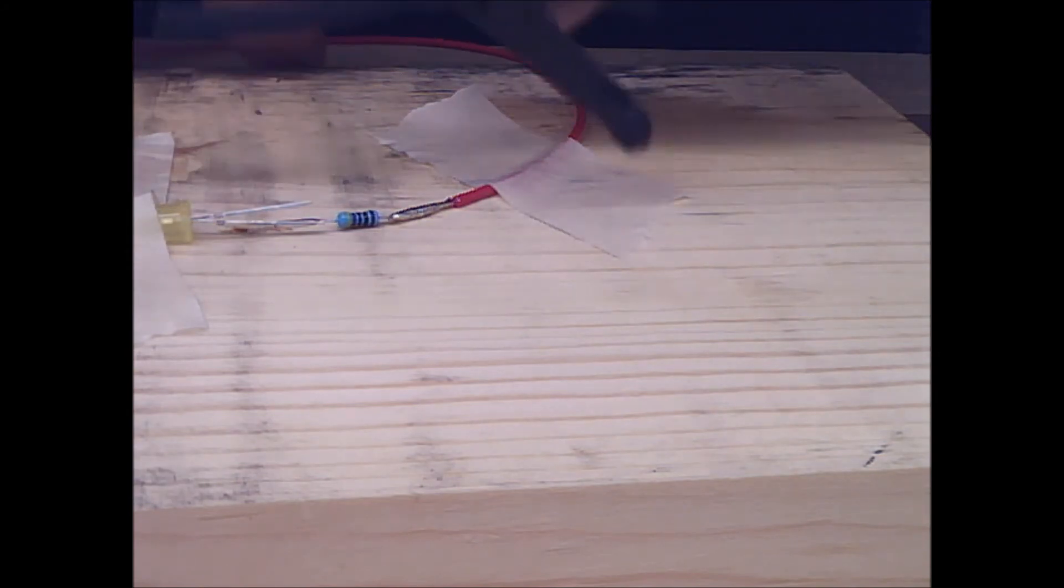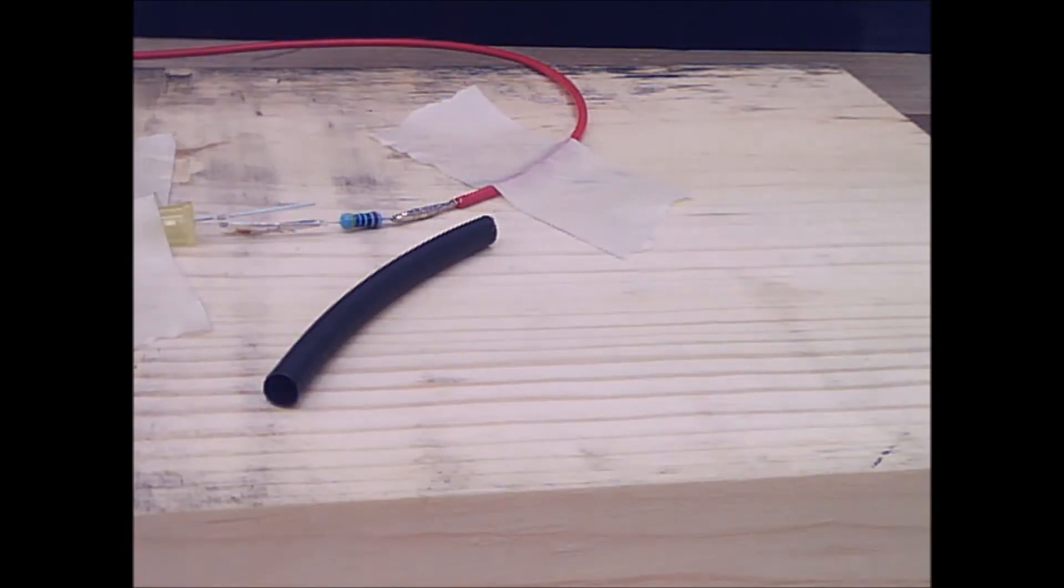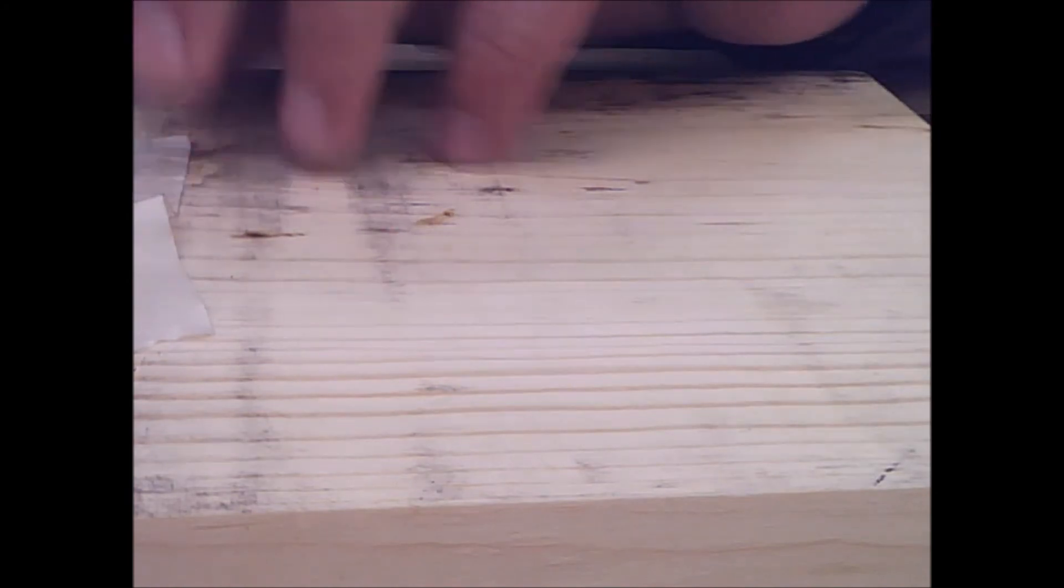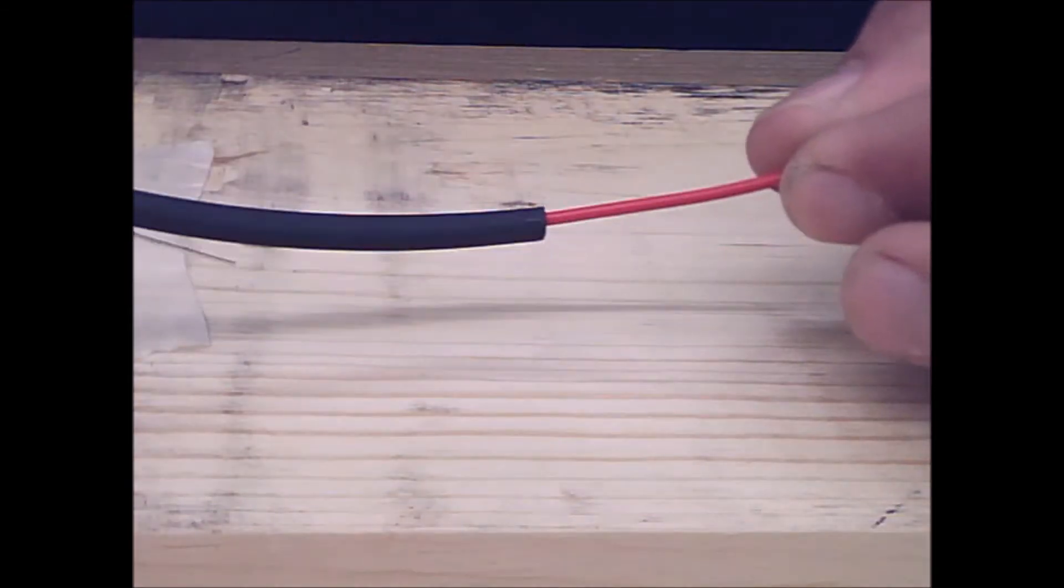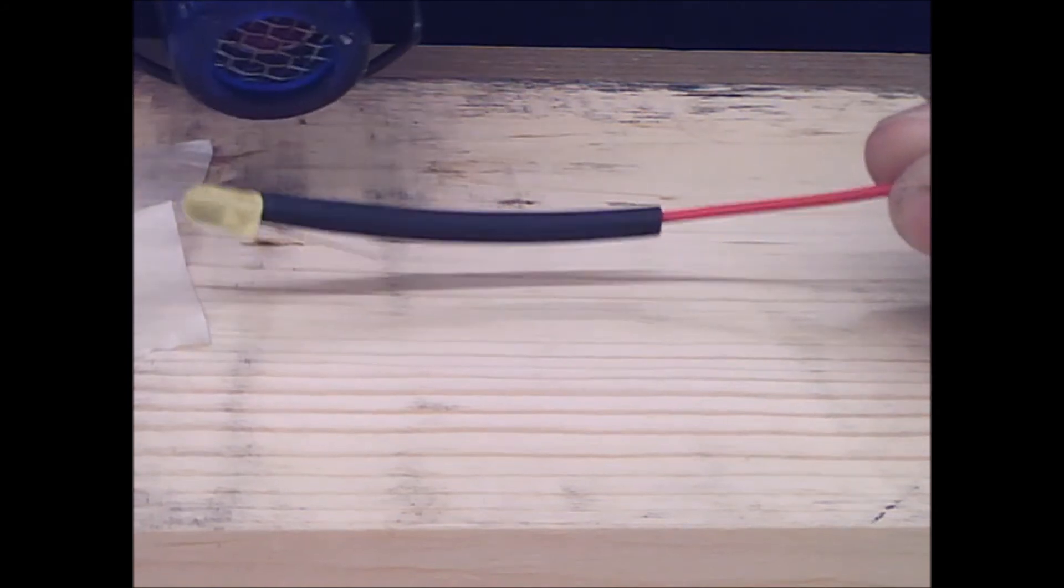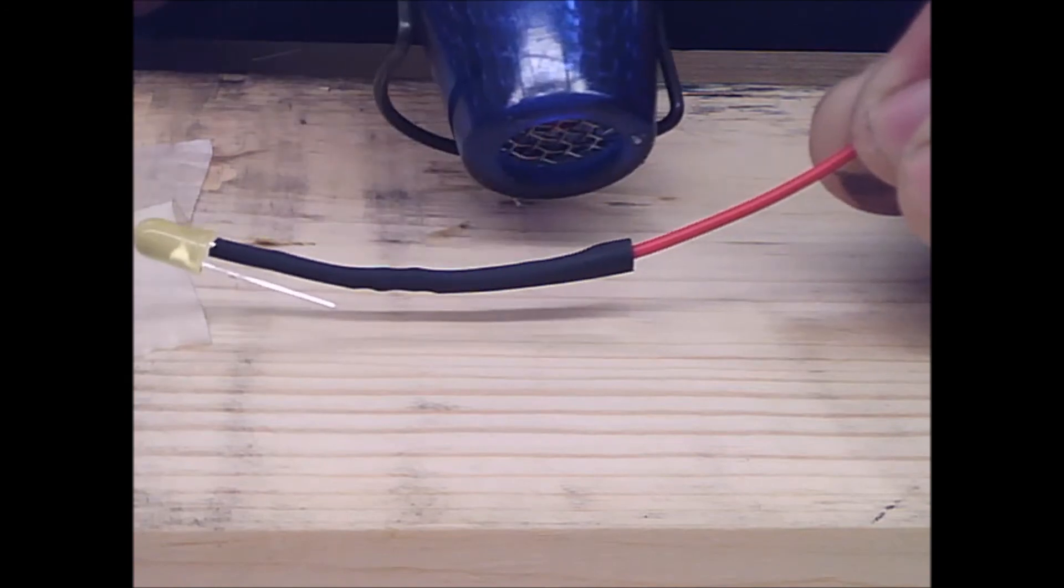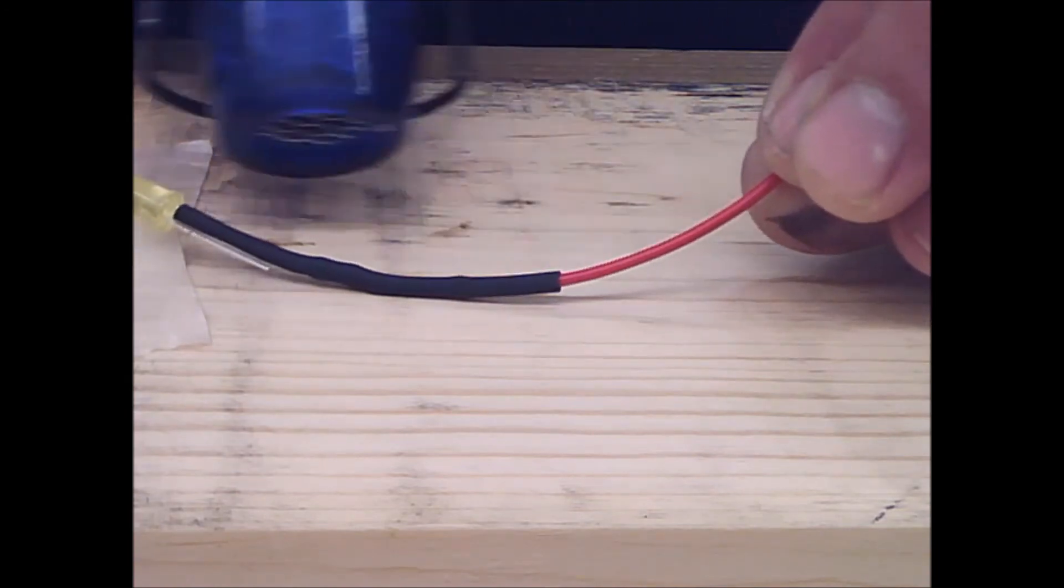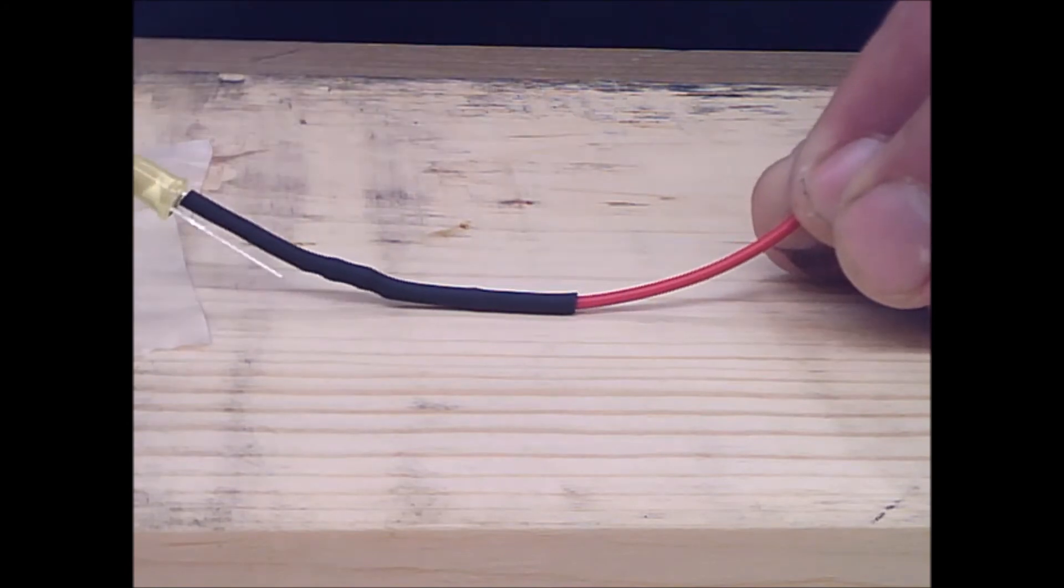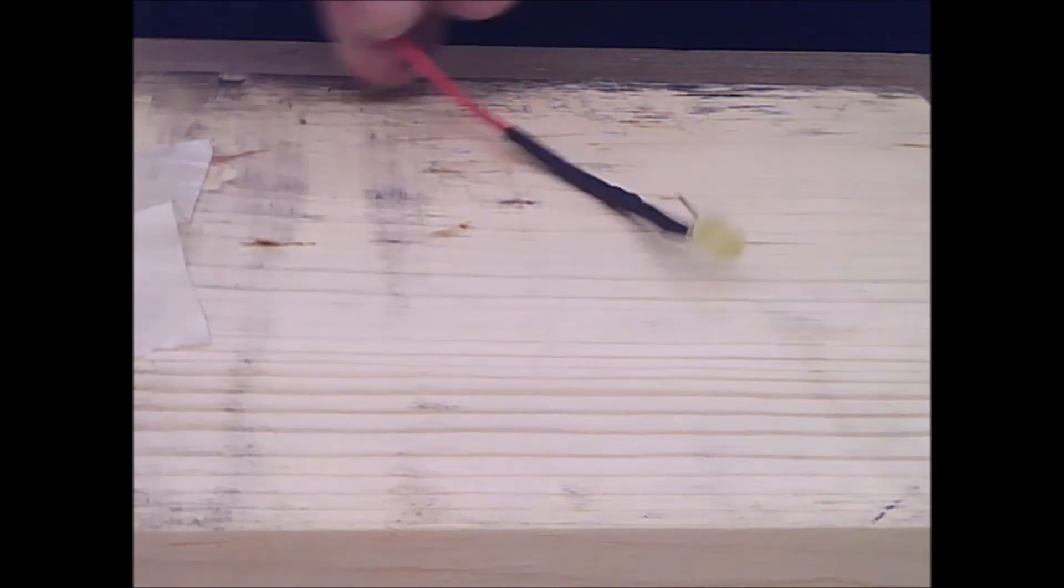Now to finish it off, I'm going to go ahead and add a piece of this heat shrink tubing. What you want to do is completely cover up the resistor and any of your solder joints. All right, that looks good.